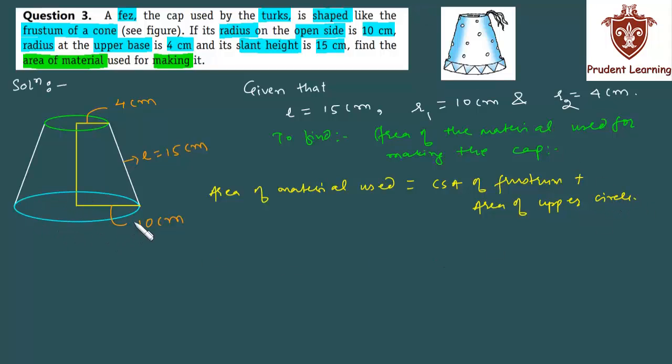We are not considering the area of this lower circular end because it is open. The curved surface area of a frustum is π(R1 + R2)L and the area of the circle is πR². By substituting the values we have 22/7 × (10 + 4) × 15 plus 22/7 × 4².